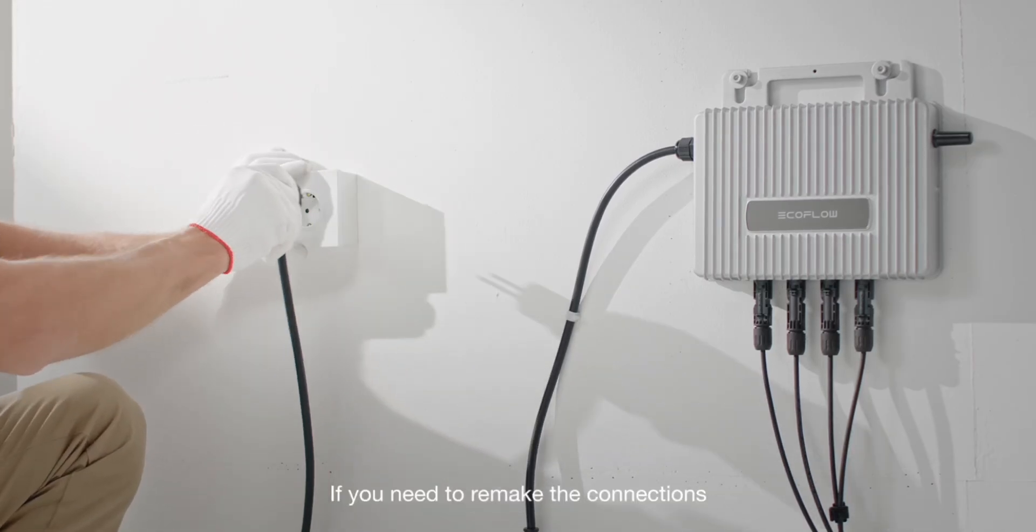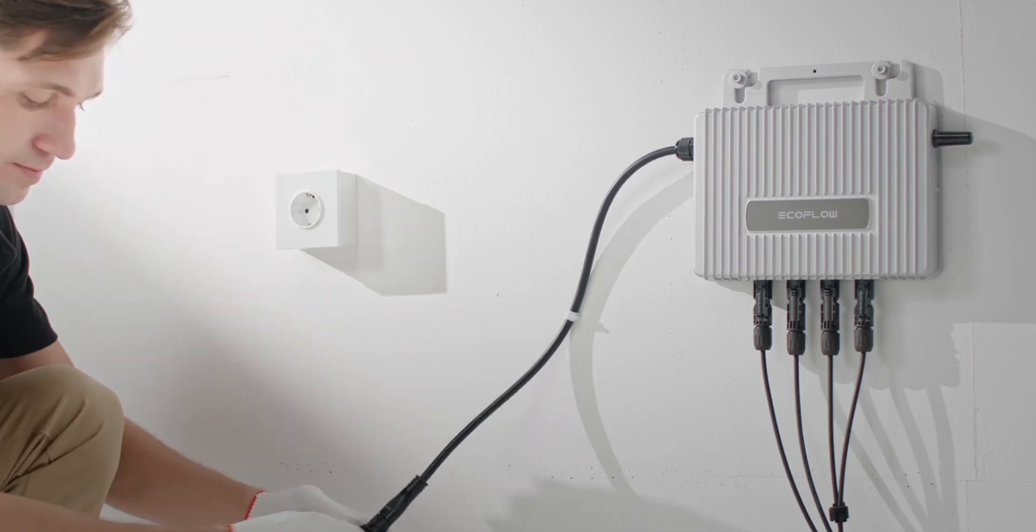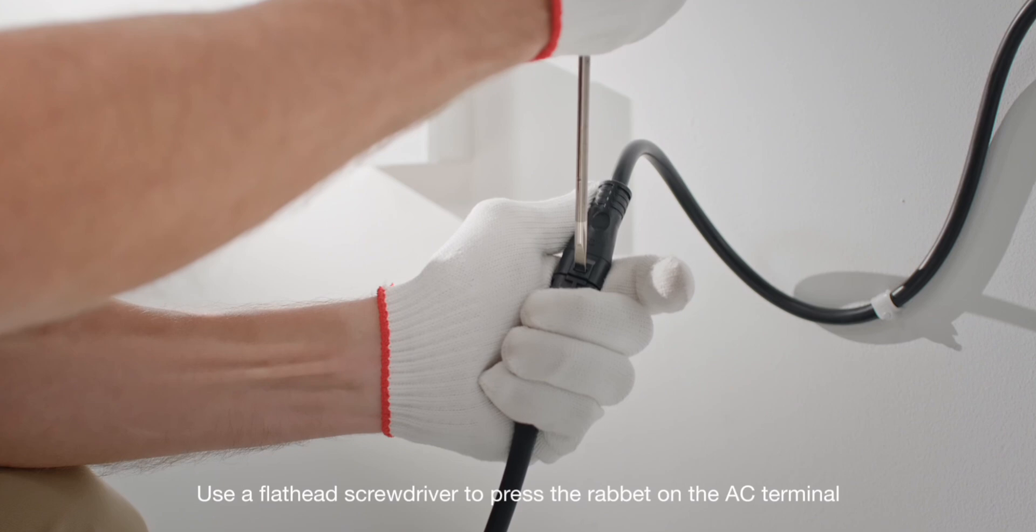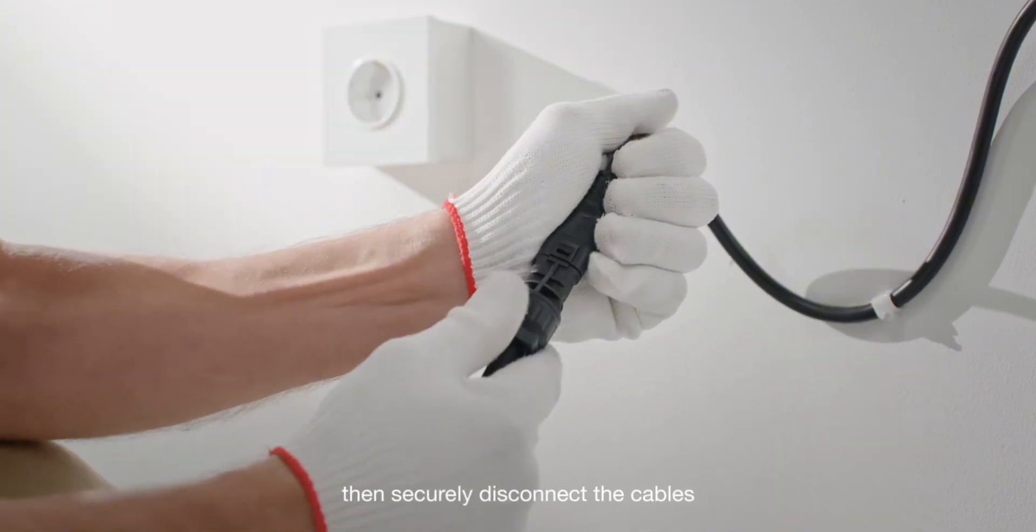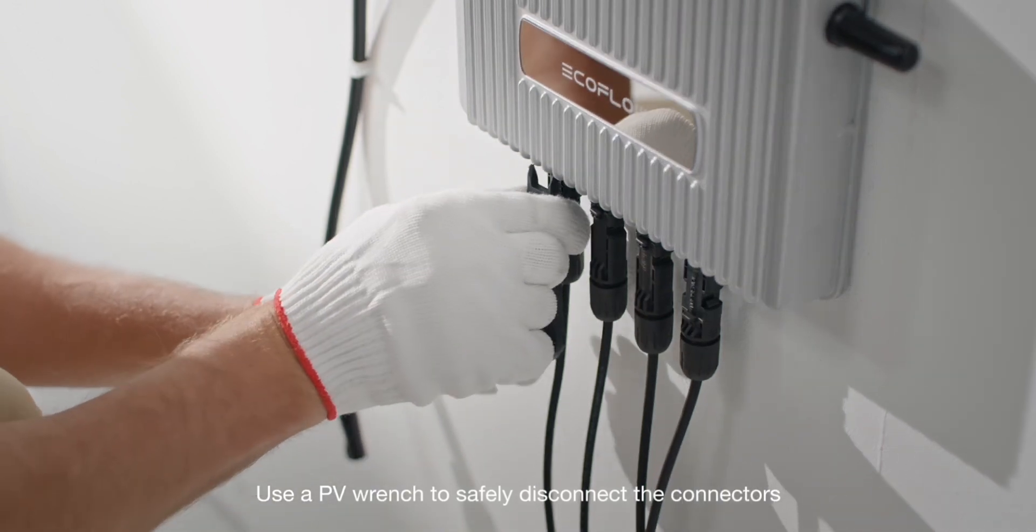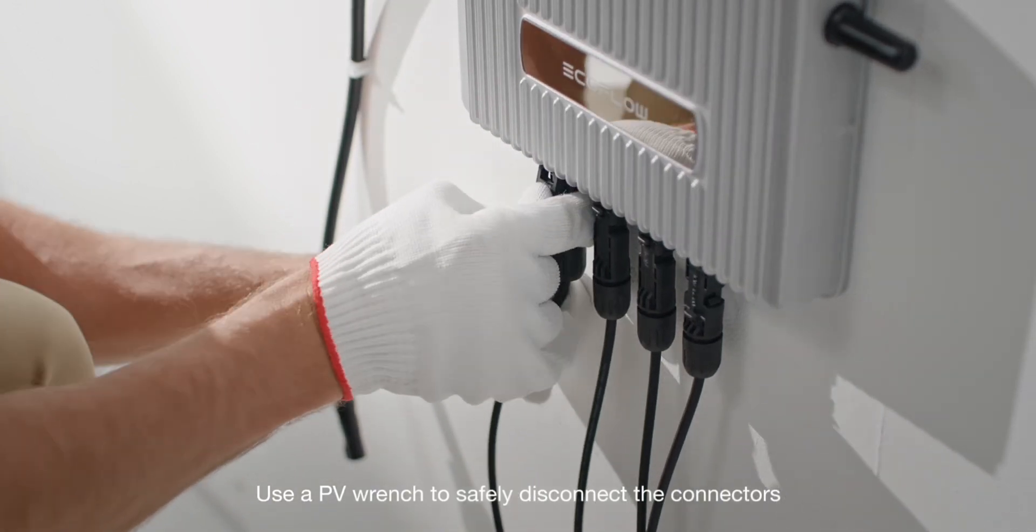If you need to remake the connections, use a flathead screwdriver to press the rabbet on the AC terminal, then securely disconnect the cables. Use a PV wrench to safely disconnect the MC4 connector.